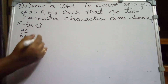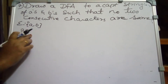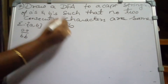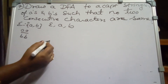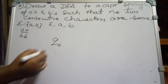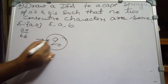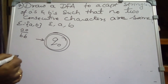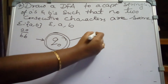The minimal string possible is either epsilon, only A, or only B. From the starting state, if the input is epsilon the string has to be accepted, so Q0 will be a final state. If the input is only A it goes to state Q1, which is also a final state.